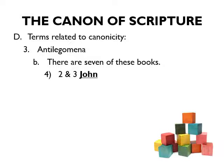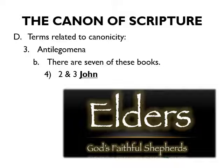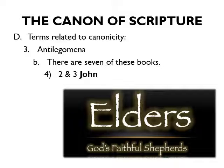The fourth disputed group is 2 and 3 John, disputed because the author calls himself an elder rather than an apostle — John usually called himself an apostle. However, when they compared 2 and 3 John to 1 John, Revelation, and the Gospel of John, the similarities were overwhelming. Additionally, in 1 Peter 5:1, Peter himself calls himself an elder. So they recognized that 2 and 3 John were indeed written by John the Apostle and should be included.